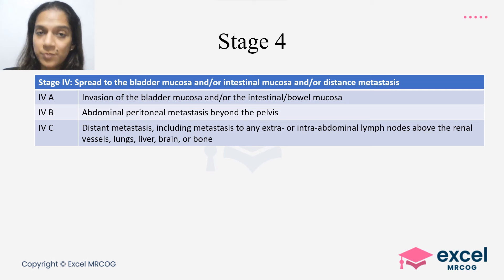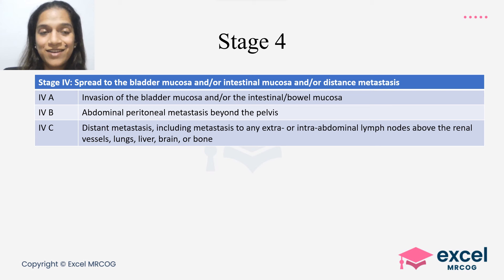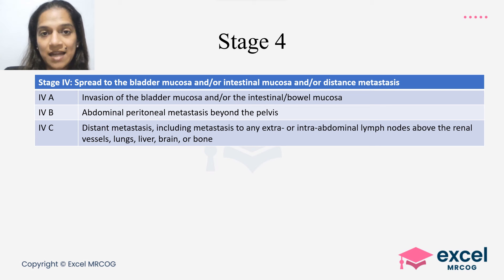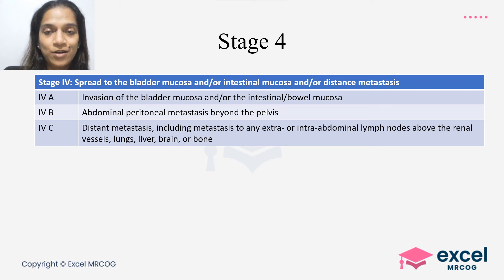Stage 4 involves spread to the bladder mucosa and/or intestinal mucosa and/or distant metastasis. Stage 4a is invasion of the bladder mucosa and/or bowel mucosa. Stage 4b is abdominal peritoneal metastasis, compared with stage 3 which involves only pelvic peritoneum. Stage 4c includes distant metastasis including lymph nodes above the renal vessels, lungs, liver, brain, or bone.